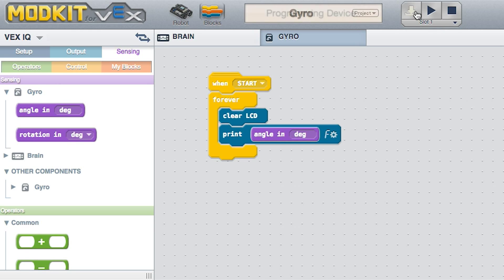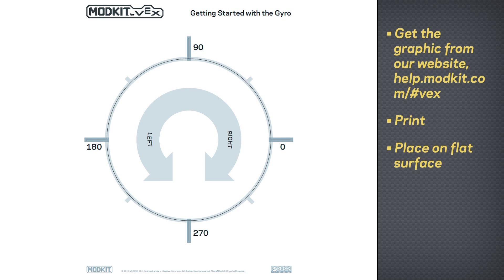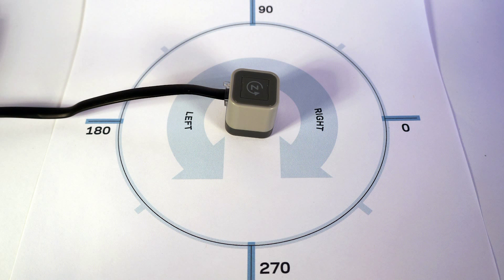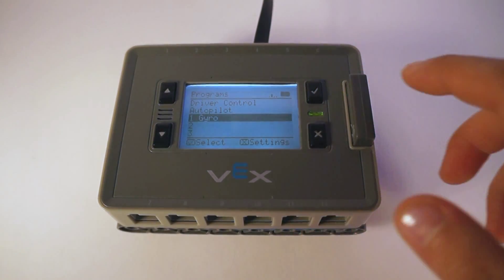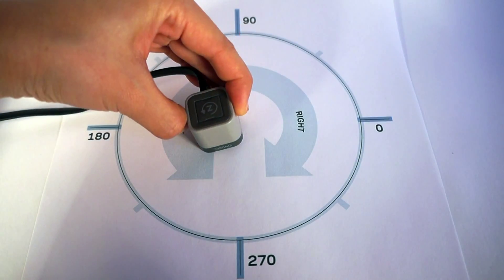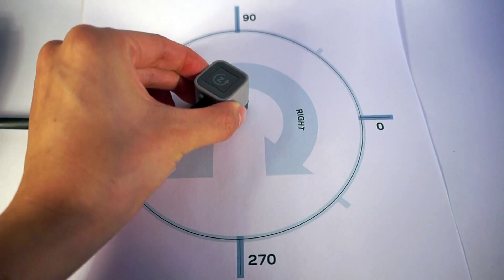Download your program onto the brain. To test the program, you can use the graphic we've provided in our guide. Note that the zero position of the gyro is set to the angle it was facing when the program started. Place the gyro on top of the coordinate graphic, run the program, and see the angle value printed on the brain. Rotate the gyro and observe how the angle changes.